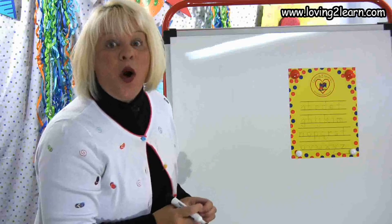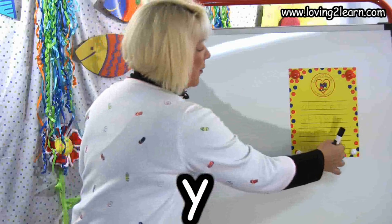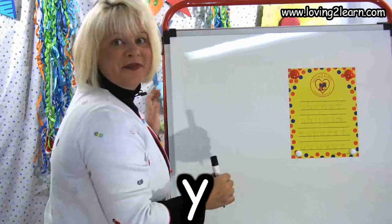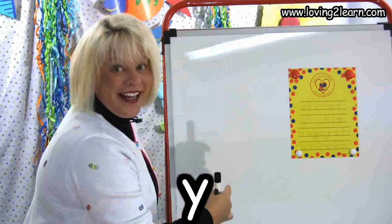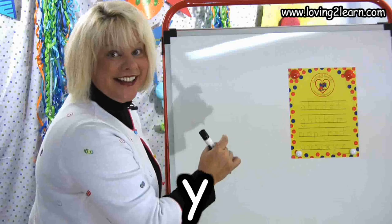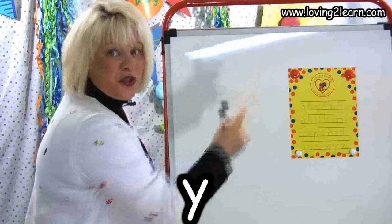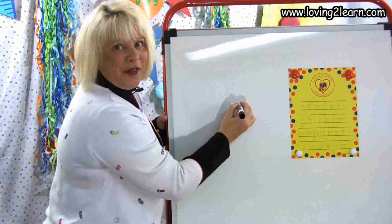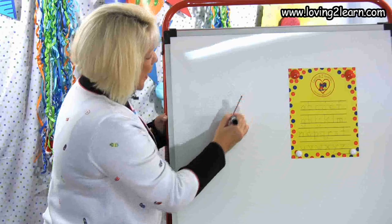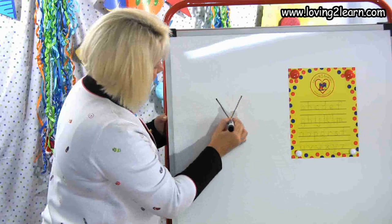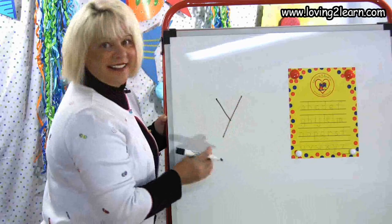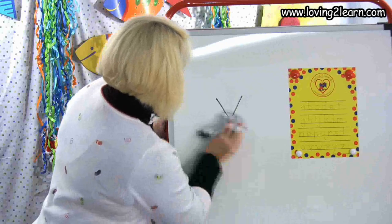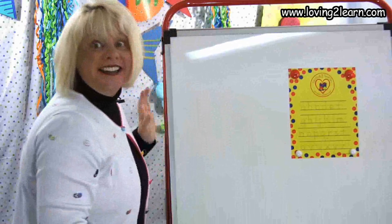The next letter is the letter Y. Y, we go straight line down, slanted line in. Let's do it in the air: straight line down, slanted line in. We'll do it on the whiteboard: straight line down, slanted line in. There's the letter Y.